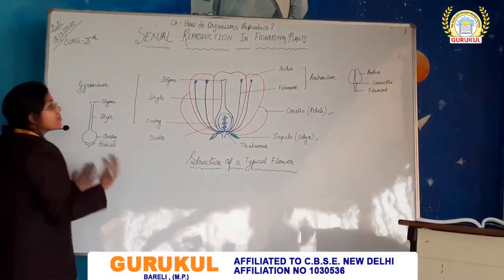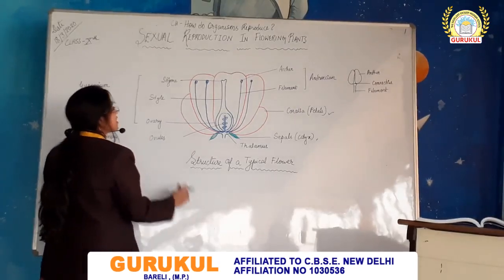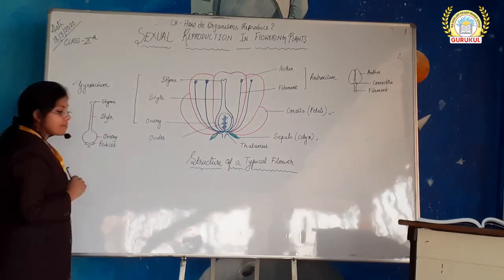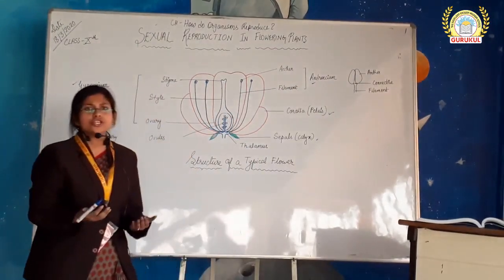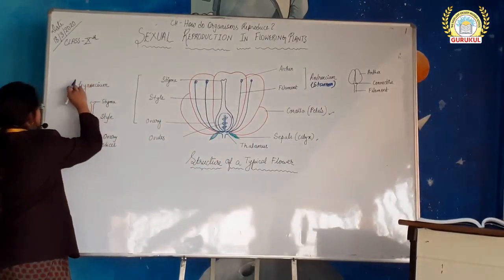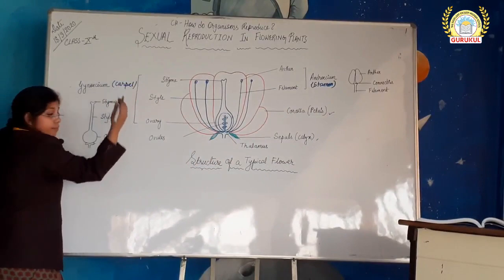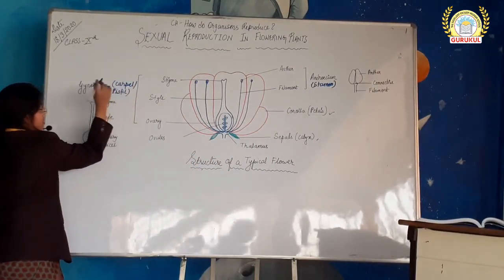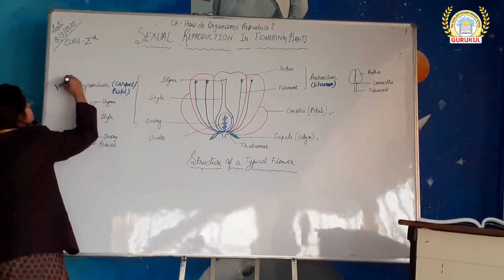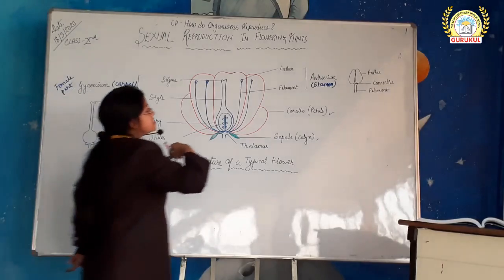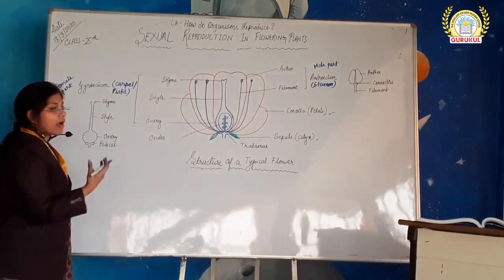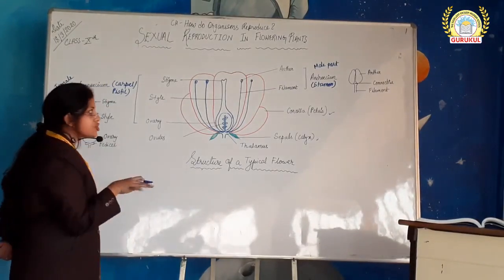Now coming to the main parts — this is a bisexual flower, so there are two major parts. One is the gynoecium and another one is the androecium. Androecium is also termed as stamen, and gynoecium is also termed as carpel. In some books it may also be termed as pistil. So gynoecium is the female part of the flower, and androecium is the male part of the flower.